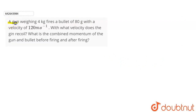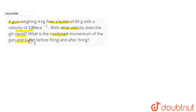In this question we have given a gun weighing 4 kg that fires a bullet of 80 grams with a velocity of 120 meters per second. With what velocity does the gun recoil? What is the combined momentum of the gun and bullet before firing and after firing?